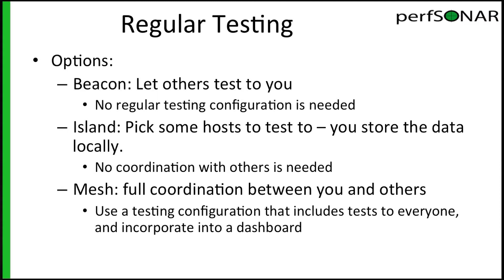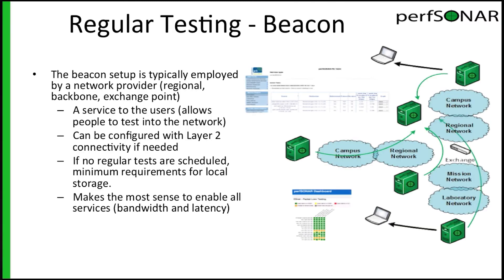In general, people set up their nodes in one of three ways. Option number one is what we call perfsonar beacon, and that lets other people run tests to you. You don't necessarily set up any regular testing configuration on the host — it's just there so that people can run tests to you. Sometimes backbone networks will set up nodes in this way.